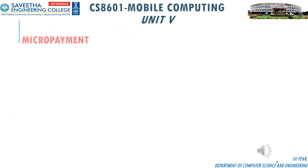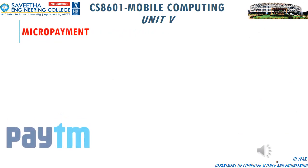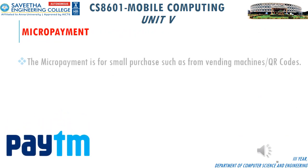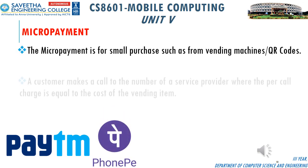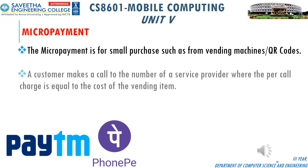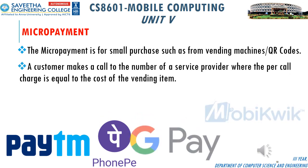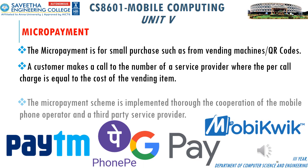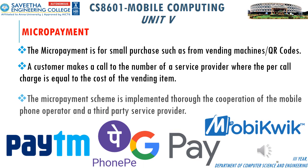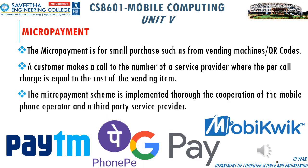Micro payment is for small purchases such as from vending machines or QR codes. A customer makes a call to the number of a service provider where the per-call charge equals the cost of the vending item. The micro payment scheme is implemented through cooperation between the mobile phone operator and a third-party service provider.